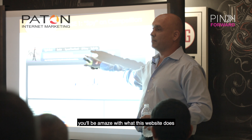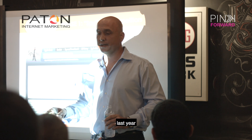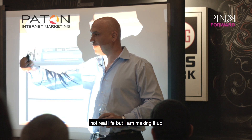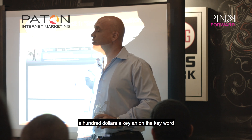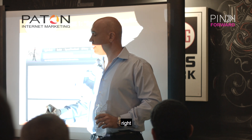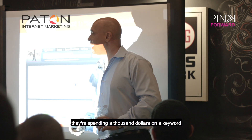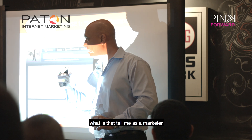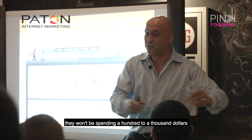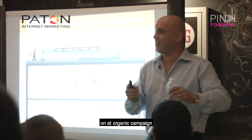You would be amazed with what this website does. It tells me trends. For example, let's use a real-life example. Last year, Tropical Mortgage — just as an example — was spending $100 on the keyword 'mortgage Broward.' I look at the history, and today they're spending $1,000 on that keyword. What does that tell me as a marketer? It's working. They wouldn't be spending $100 to $1,000 if it didn't work on the paid side. So let's use that on our organic campaign.